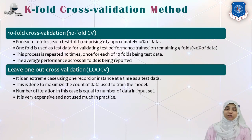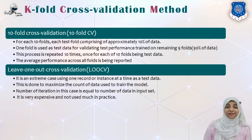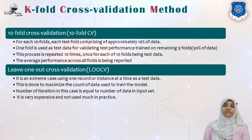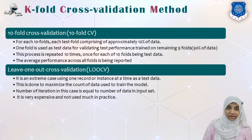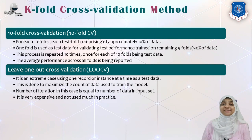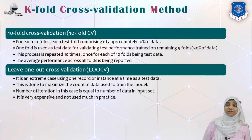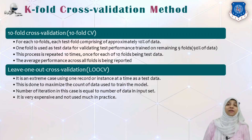In Leave-One-Out Cross Validation (LOOCV), only one record is left as validation and all remaining data instances are used as training data. Instead of leaving ten percent or some k percent for validation, we leave only one record at a time. If we have n samples, this process is repeated n times. This is very computationally expensive and is not commonly used in practice.